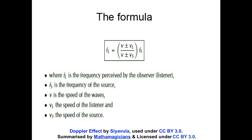V alone is the speed of the waves, or the speed of sound waves, which is normally given as 340 meters per second — that is the average speed of sound always given in the question, though sometimes it differs and the question will state what it is. V_L is the speed of the listener, and V_S is the speed of the sound source. The formula seems a little messy, but it's actually quite simple once we understand the scenario.